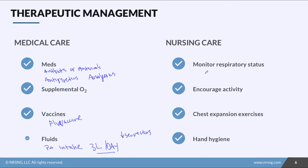For nursing care, we need to monitor respiratory status closely — sometimes these patients are really struggling and may need to be intubated, so we need to advocate for them and monitor to determine if they're escalating to that level. We need to encourage activity, especially after surgery, to help mobilize secretions and prevent post-op pneumonia. We should encourage chest expansion exercises like turn, cough, deep breathe (TCDB), and incentive spirometry — incentive spirometry is the number one nursing intervention you can do to help the patient get those deep breaths.